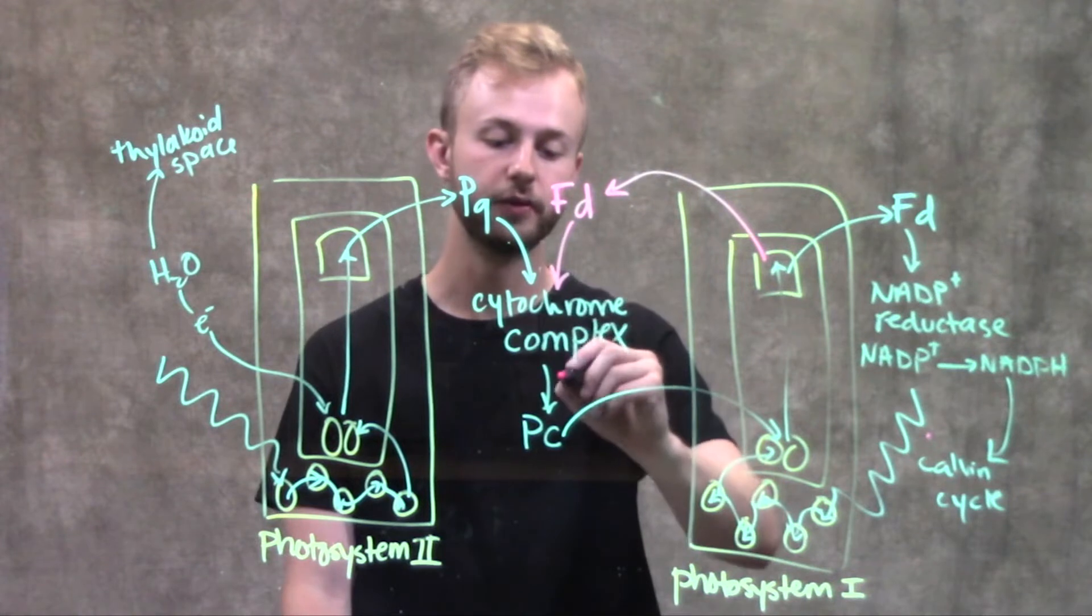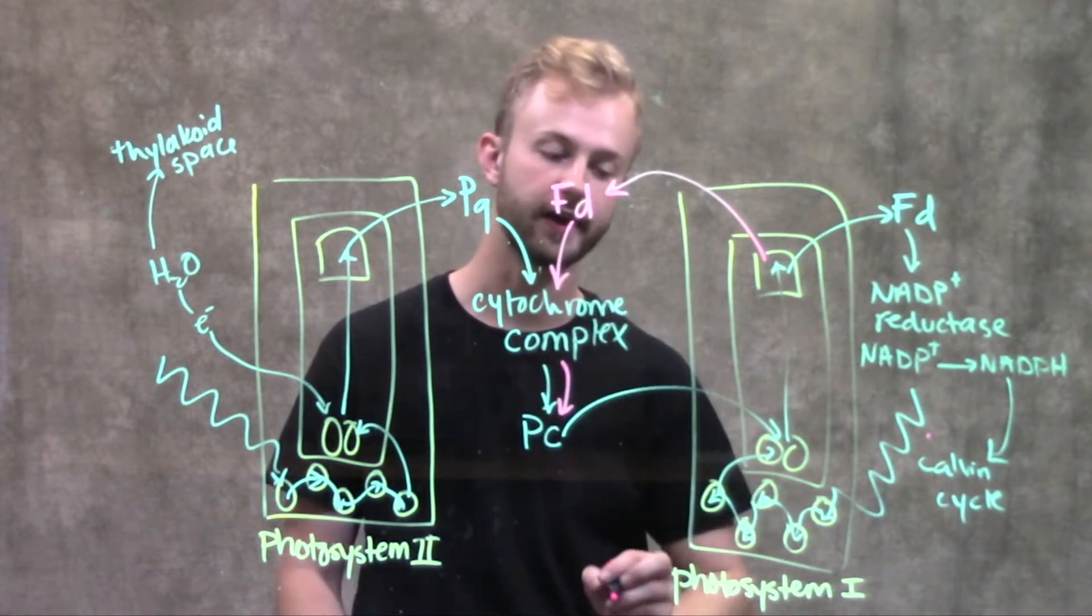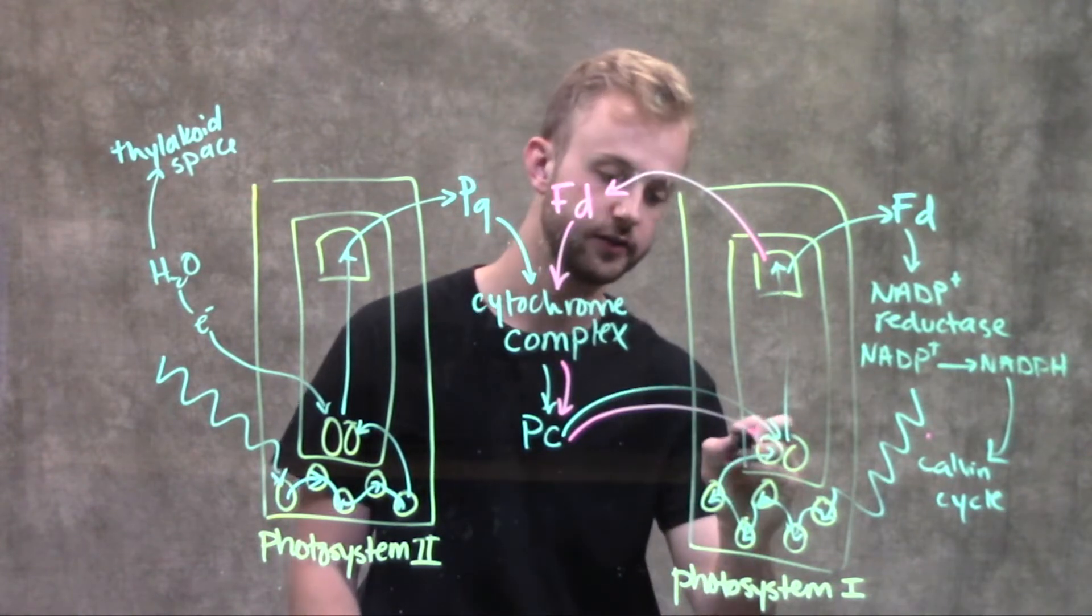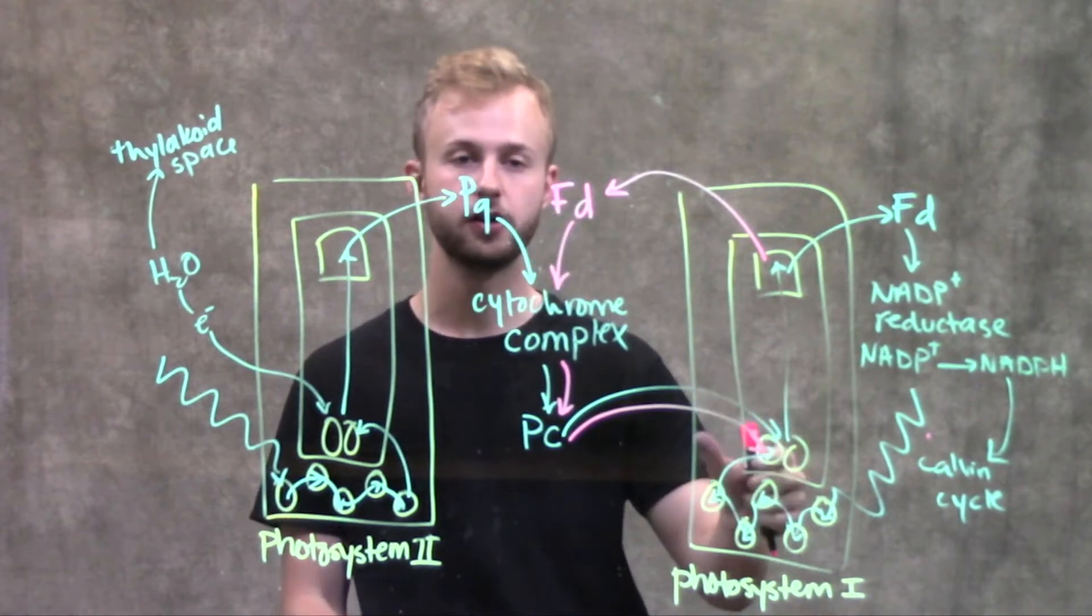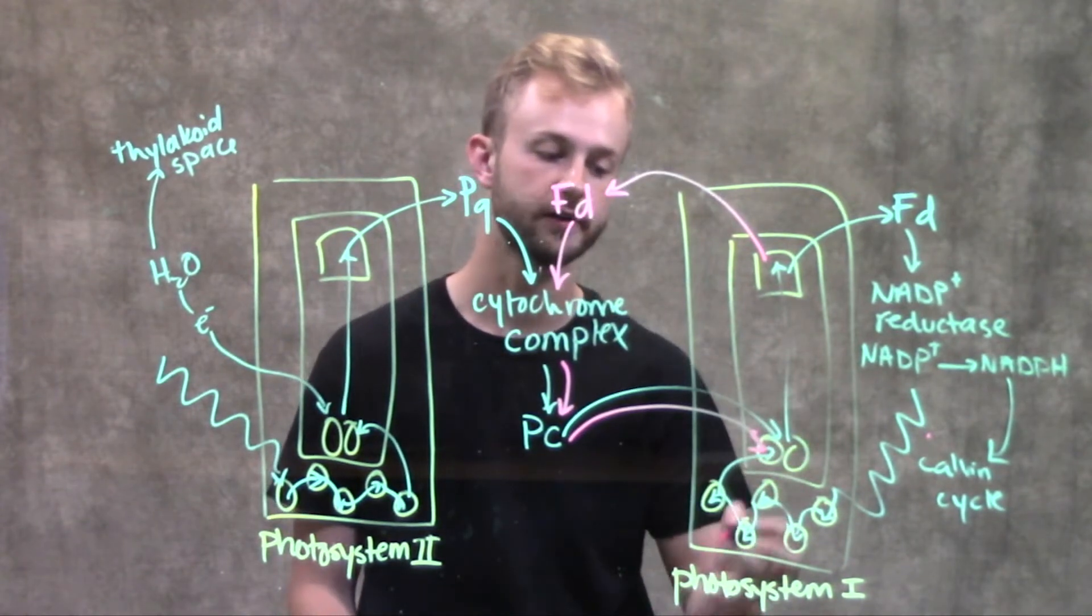From the cytochrome complex, it goes to plastocyanin and then back to the P700 molecules in the reaction center complex.